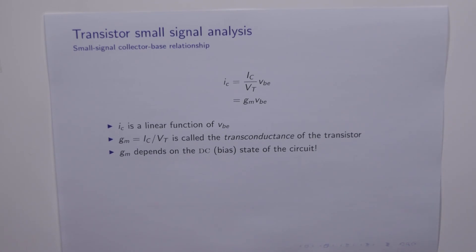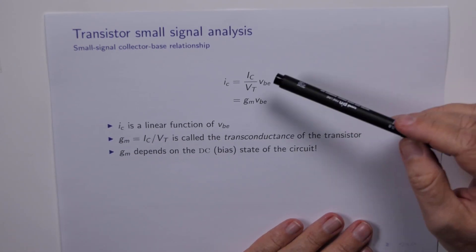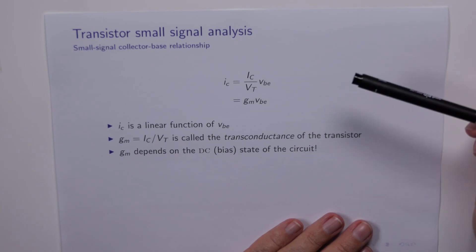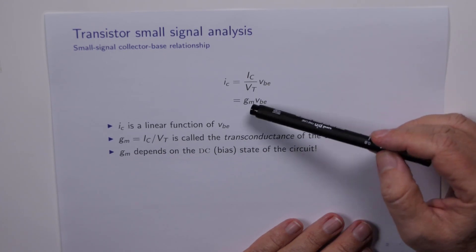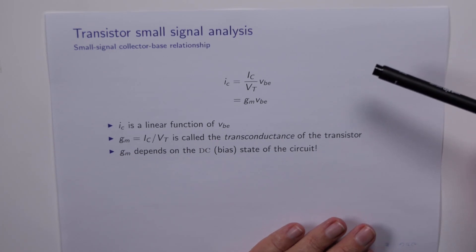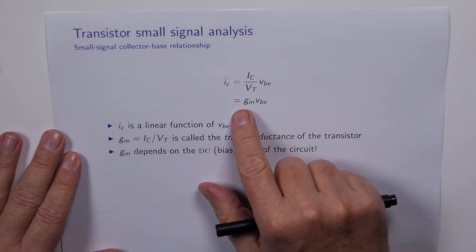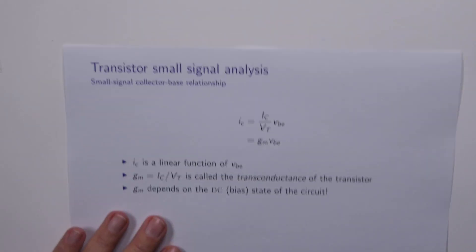For example, if you've used LT SPICE, when you run an AC analysis it can't do that until it's done its own DC analysis, because in this case it needs to know what is the quiescent current in the transistor, because without that we can't work out the transconductance. All right, let's keep going. We can extract a bit more out of this equation before we're done.